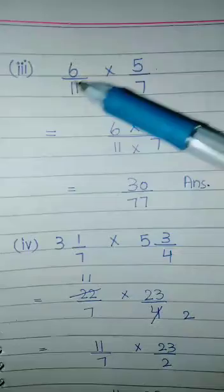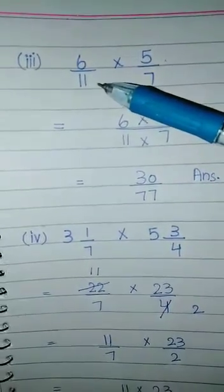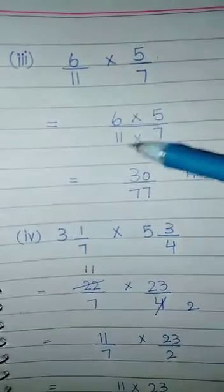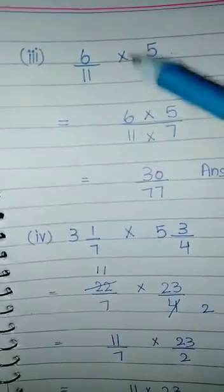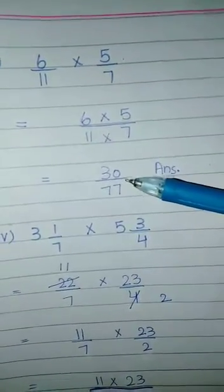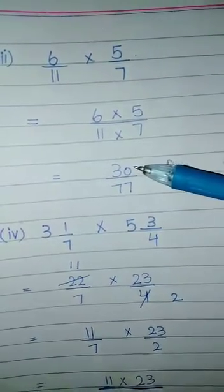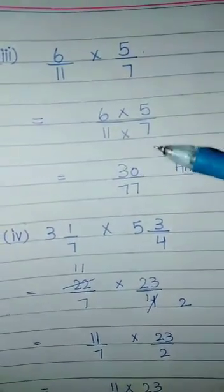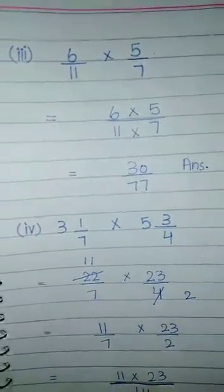After that, question 3: 6 by 11 multiplied by 5 by 7. Use the same method — multiply the top terms and multiply the bottom terms. 6 fives are 30, and 11 sevens are 77, giving us 30 by 77. Now this is a proper fraction because the denominator is larger than the numerator, so it cannot be divided further. This is already our simplest answer.